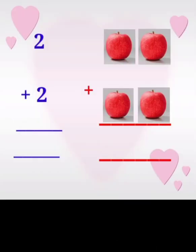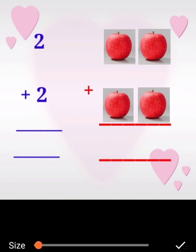First problem: 2 plus 2. First row, 2 apples are given here. 1, 2, plus 2 — 3, 4. Totally how many apples are given here? 1, 2, 3, 4. The answer is 4. 2 plus 2 is 4.